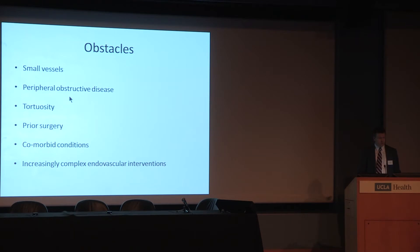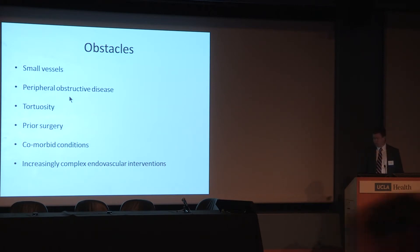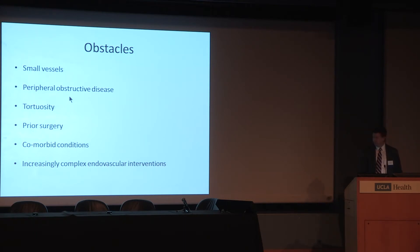The obstacles we face in delivering devices include patients with small access vessels and concomitant peripheral obstructive disease — plaque that gets in the way and makes it hard to deliver devices. The arteries can be very tortuous. They can have had prior surgery in the groins or abdomen, and there can be existing comorbid conditions such as obesity. As we do more increasingly complex endovascular interventions, this topic has come full circle. Original devices were large sheaths with stiff devices, and iliac conduits were common. As devices improved — lower profile, hydrophilic coatings, more flexible delivery — this was less important, but now with advanced endovascular work we encounter these obstacles more often.